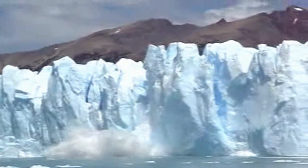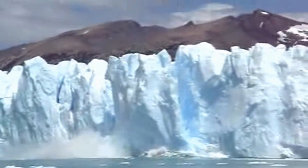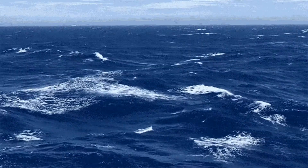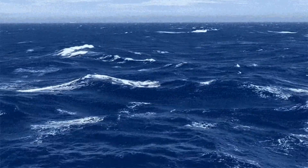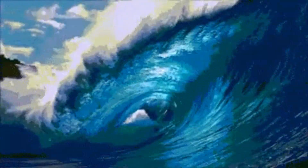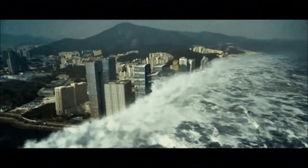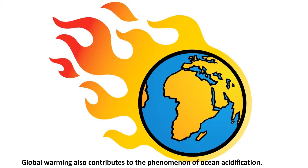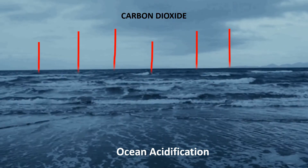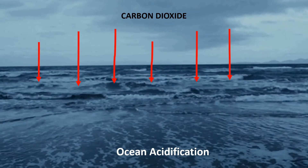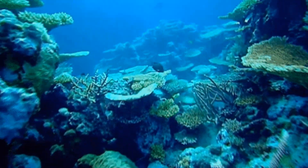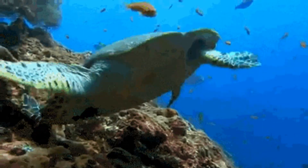This causes average temperatures across the globe to rise, which is called global warming. Global warming is causing ice sheets and glaciers to melt, and the melting ice is causing sea levels to rise. The rising seas will eventually flood low-lying coastal regions. Global warming also contributes to ocean acidification, the process of ocean waters absorbing more carbon dioxide from the atmosphere, which may affect the plants and animals living in the ocean.